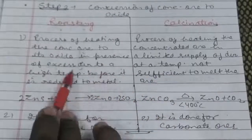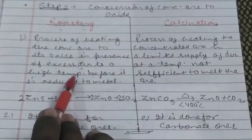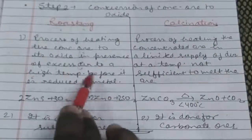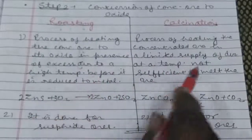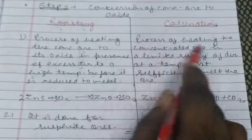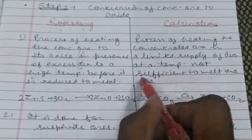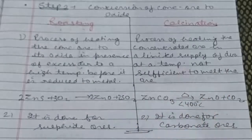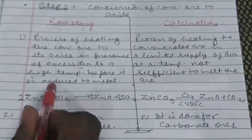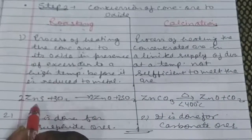In calcination, these words "before it is reduced to metal" is the key word. In this you have to heat the ore in absence of air or very limited supply of air, not sufficient to melt the ore. So this is basically done. Roasting is basically done for sulphide ores.